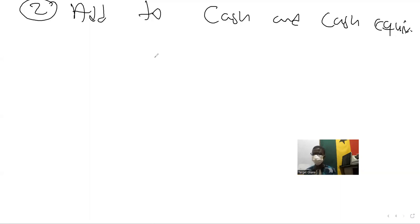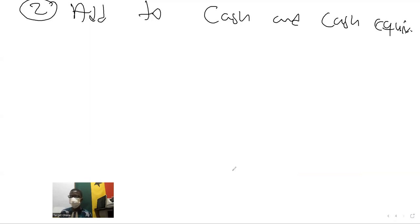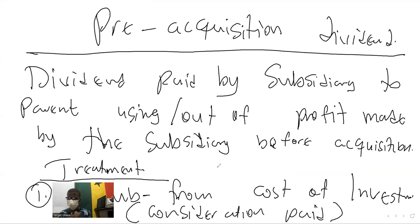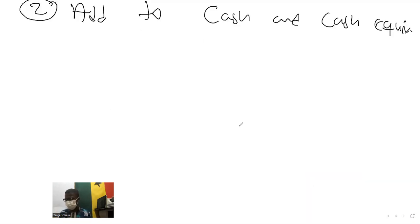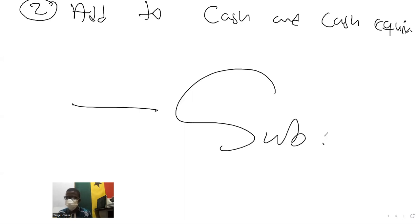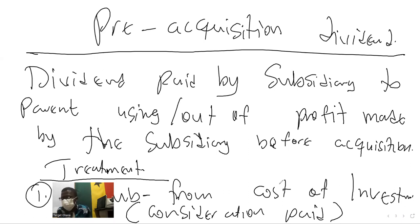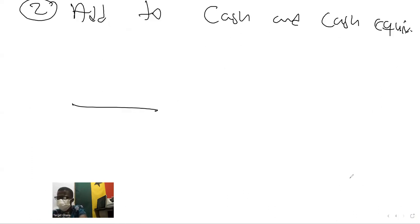So that's pre-acquisition dividend. To recap with the analogy: if you marry a lady and right after marriage the lady's family gives you money that was saved earlier, that's called pre-wedding benefits. You subtract it from the bride price to know the actual bride price you paid. Here the bride price is called the consideration or cost of investment. You subtract it from there to reduce your investment. That's all for pre-acquisition dividend.